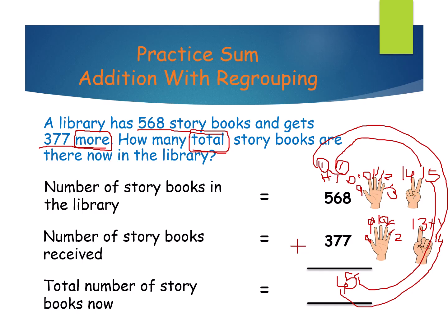Now the hundreds digit values are 5, 3 and plus 1 carry over. Big number 5, open 3 fingers. What is 5 after? 6, 7 and 8. Plus 1 carry over — 8 plus 1 equals 9. How many storybooks are in the library in total? 945.